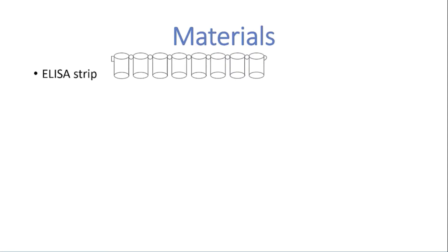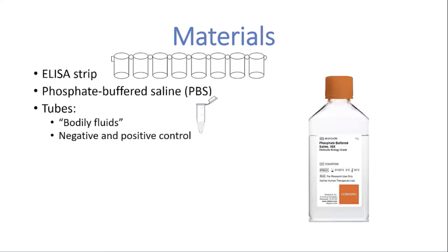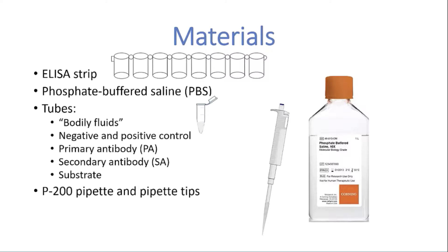The materials for this lab include an ELISA strip with eight wells, phosphate buffered saline, and tubes — a numbered one with bodily fluids, a negative and positive control, primary antibody, secondary antibody, substrate, and also a p200 pipette with pipette tips and a transfer pipette.